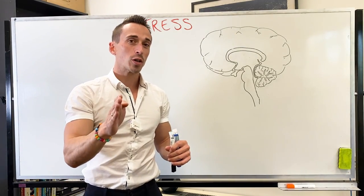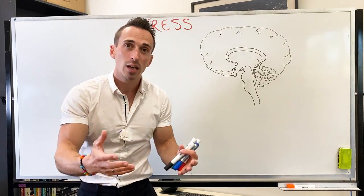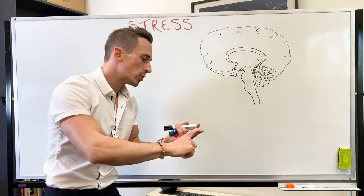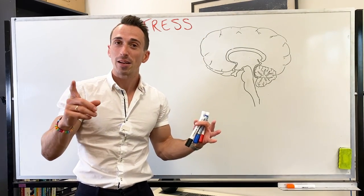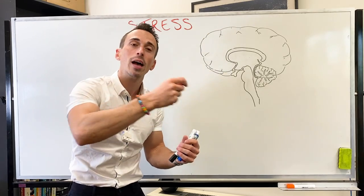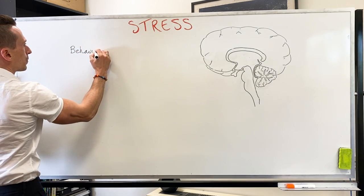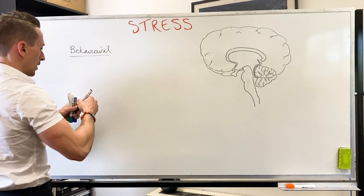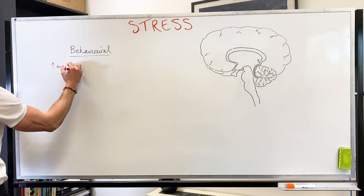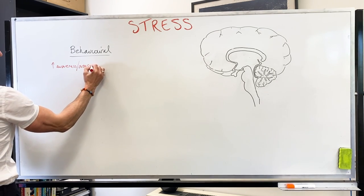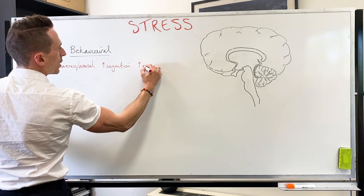Cortisol can have really important effects on the body, and you can broadly base it on the systems — cortisol has effects on the nervous system, the immune system, the cardiovascular system, and the endocrine system. But you could probably break cortisol's effects down into behavioral and physiological. So let's look at the behavioral effects of cortisol. When cortisol is released it can help increase awareness and arousal, it can increase cognition, and it can increase analgesia if it needs to.